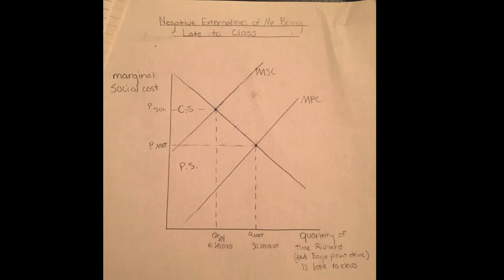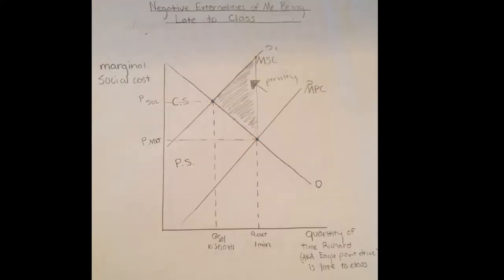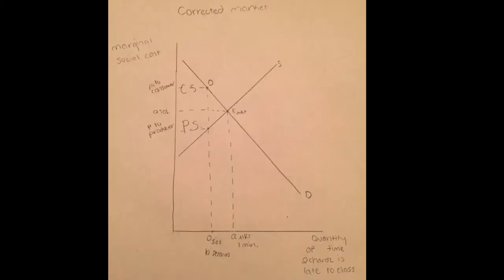This is a graph of the market of me being late to class. The current market equilibrium is that I am 30 seconds or more late to class. Now, we want to get that to the socially optimal level of me being 10 seconds or less late to class. To correct this market failure, a penalty will be imposed that will make the marginal private cost equal the marginal social cost. This is the corrected market.